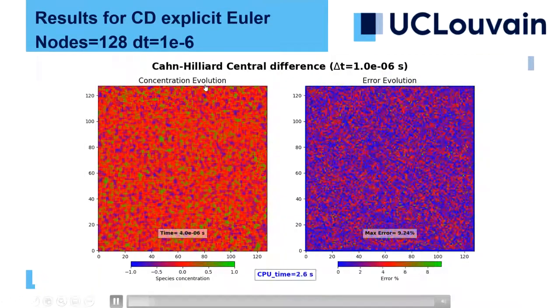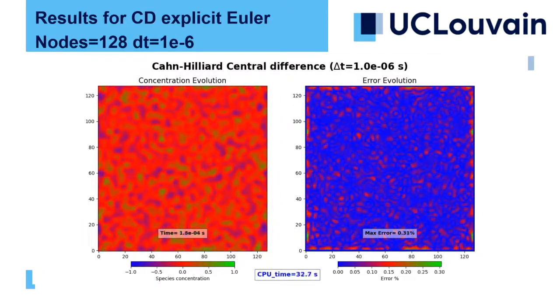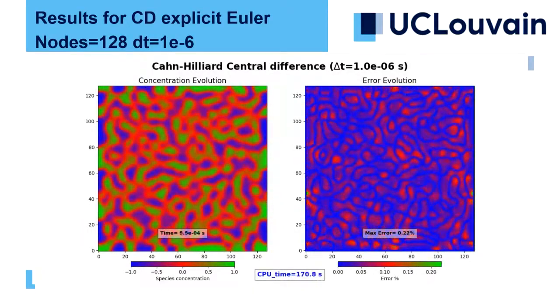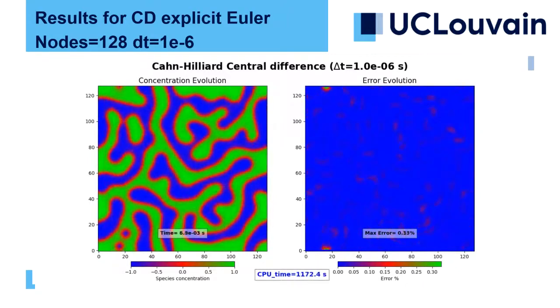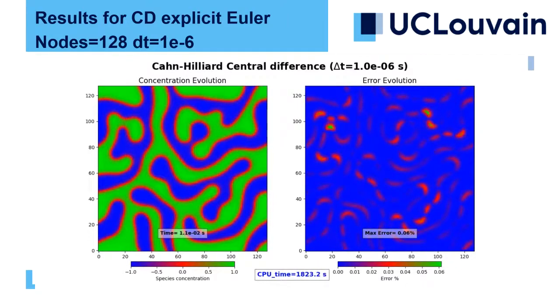For the results of the explicit Euler scheme with central differences, we see that it is a stable scheme for 128 nodes with dt equal to 10 to the power minus 6. However, as you can see from the CPU time taken to calculate the computation, it's pretty large and goes up to almost around 25 to 30 minutes. The error is accumulated at every time step. If you go to higher number of nodes with larger time step, the equation may not converge and we can have an overflow.